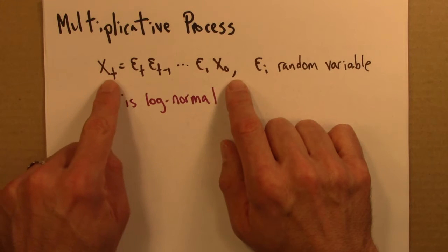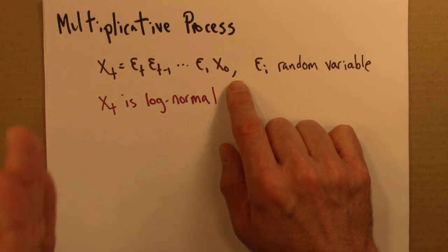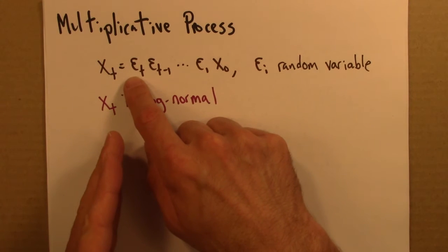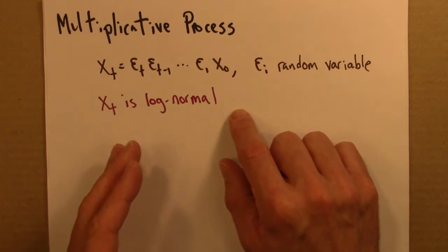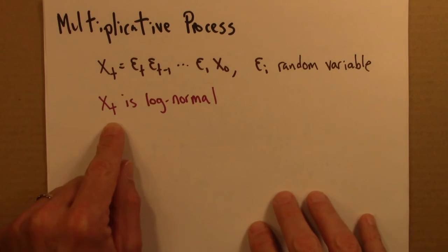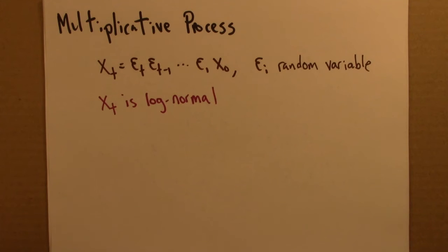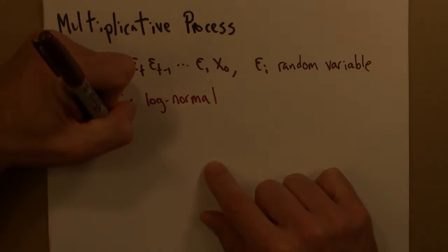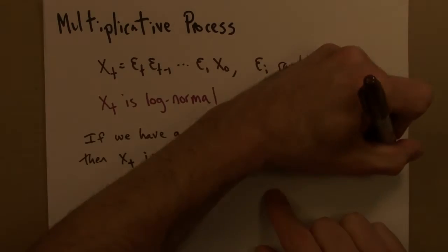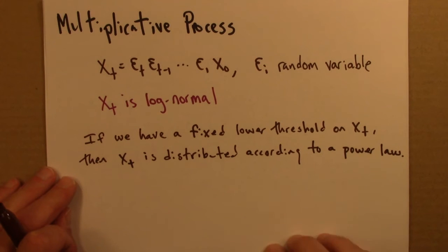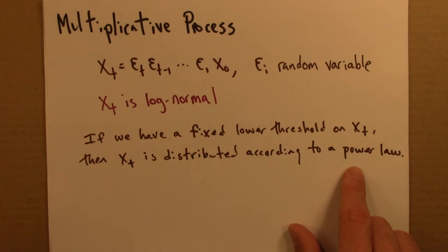So there's some lower cutoff in this process. Then the distribution changes. If we put some lower threshold, in other words we don't let this get arbitrarily close to zero, then that's enough to convert the distribution of X_T from log-normal into a power law.